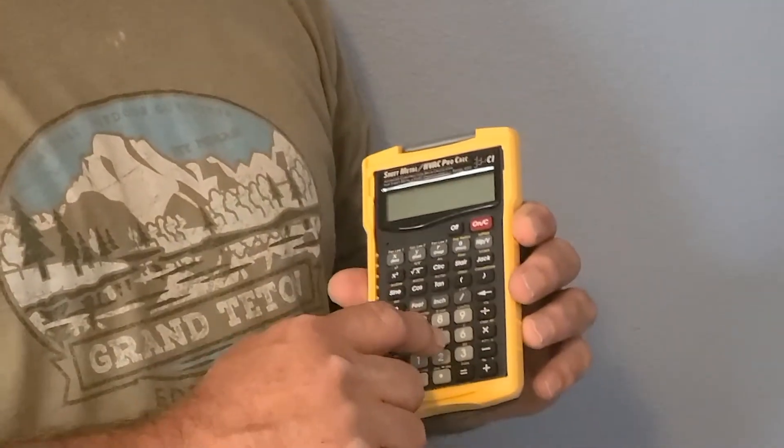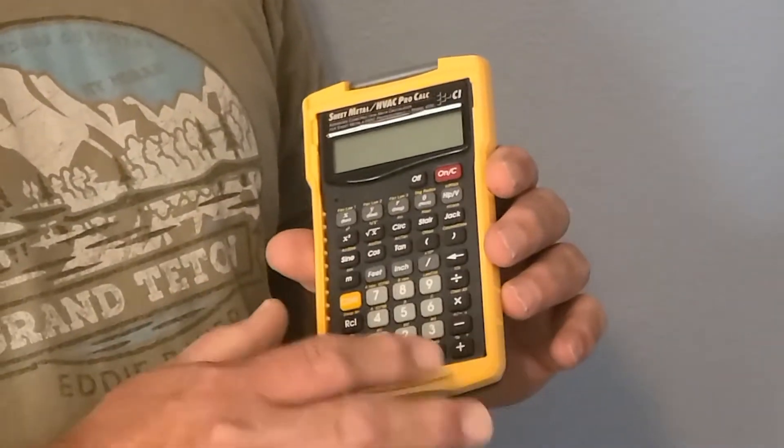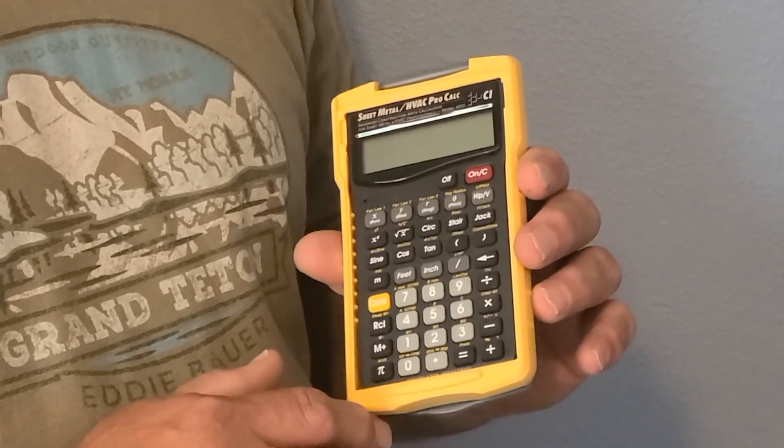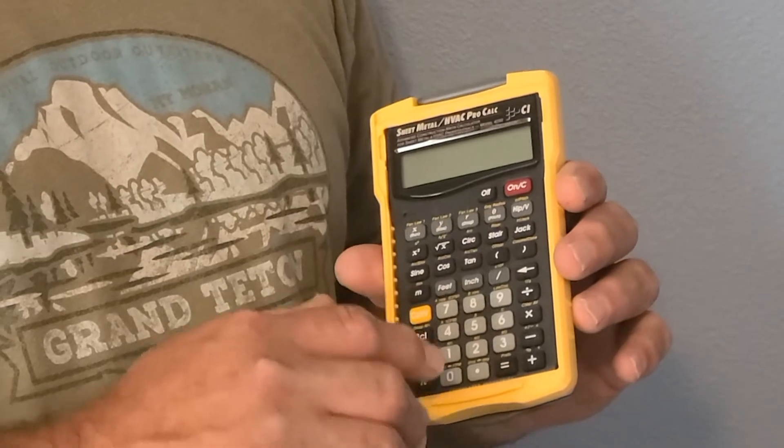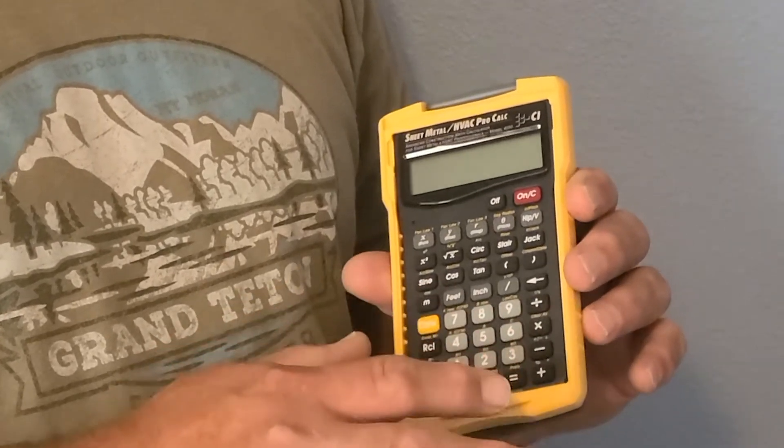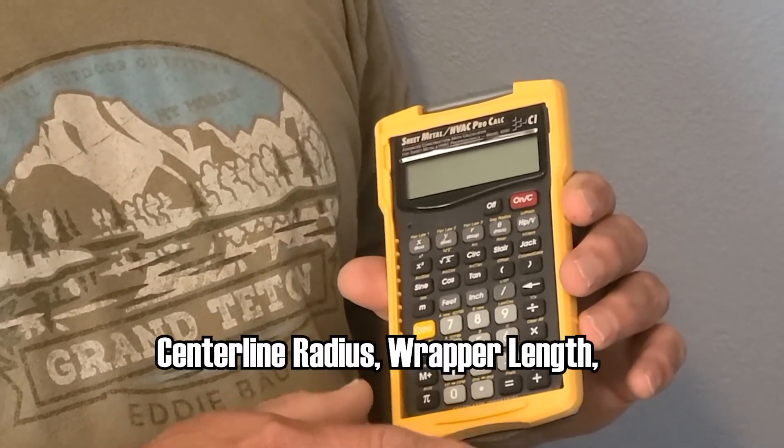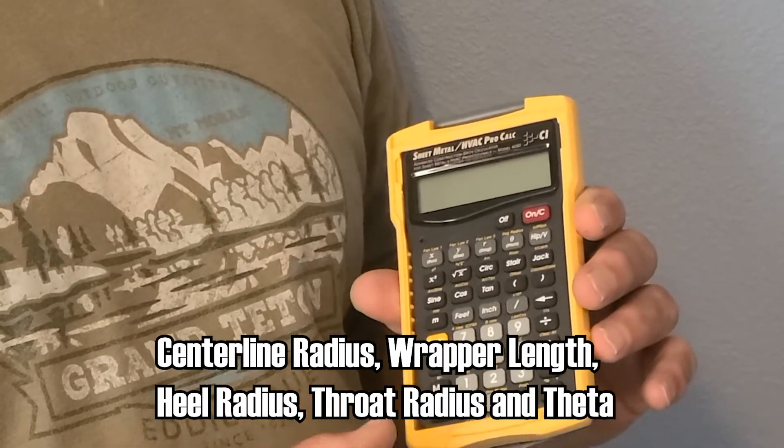To figure out lengths and angles of an offset, let's look at an example. Our offset is 5 feet, the length is 10 feet, and the height of end A is 7 feet. We need to calculate the centerline radius, wrapper length, heel radius, throat radius, and theta.